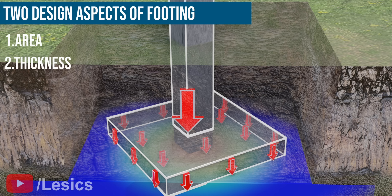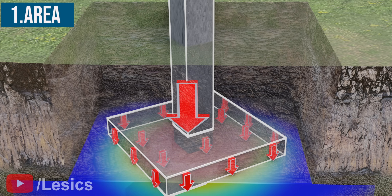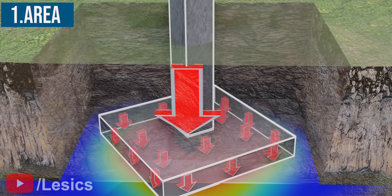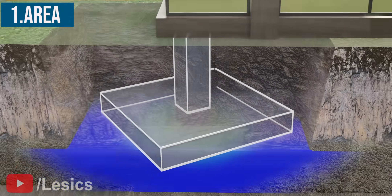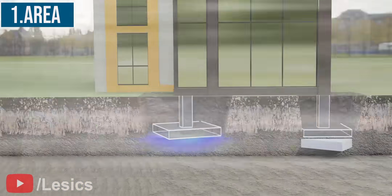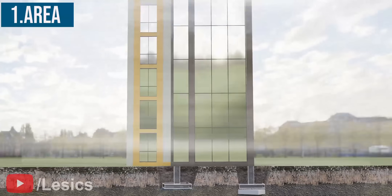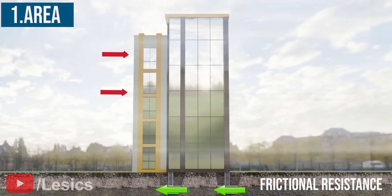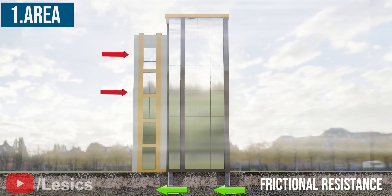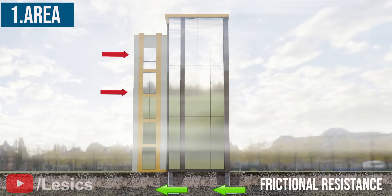We have already seen the importance of the footing area — the more the weight of the building, the wider should be the footing. Additionally, if the structure is subjected to lateral forces like winds or floods, footings will help your building avoid sliding as a result of frictional resistance between the footing and the soil.